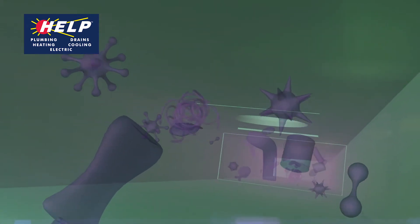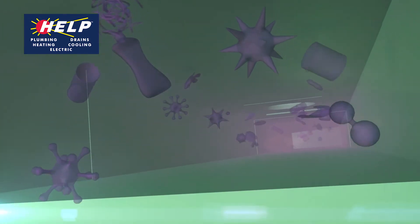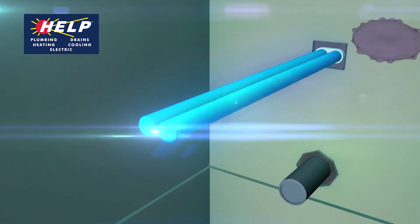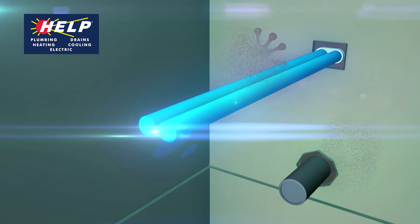As germs, gases and other microorganisms come in contact with the rays from the UVC-UVV germicidal lamp, the germs are sterilized while the gases are neutralized and are no longer a threat.